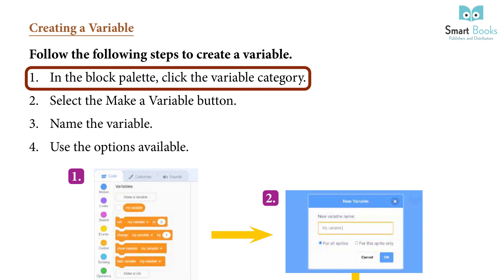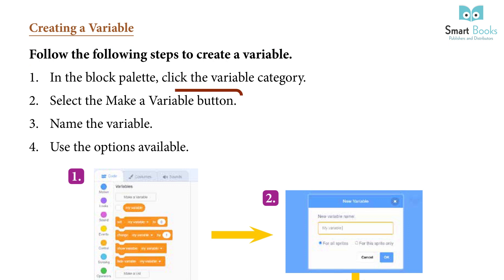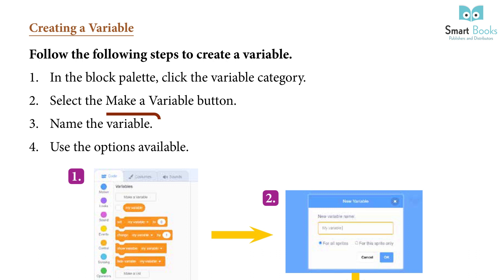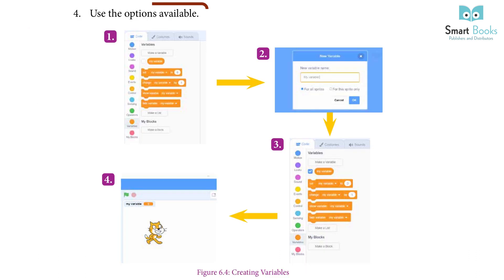Creating a Variable: Follow these steps to create a variable. 1. In the block palette, click the Variable category. 2. Select the 'Make a Variable' button. 3. Name the variable. 4. Use the option available.